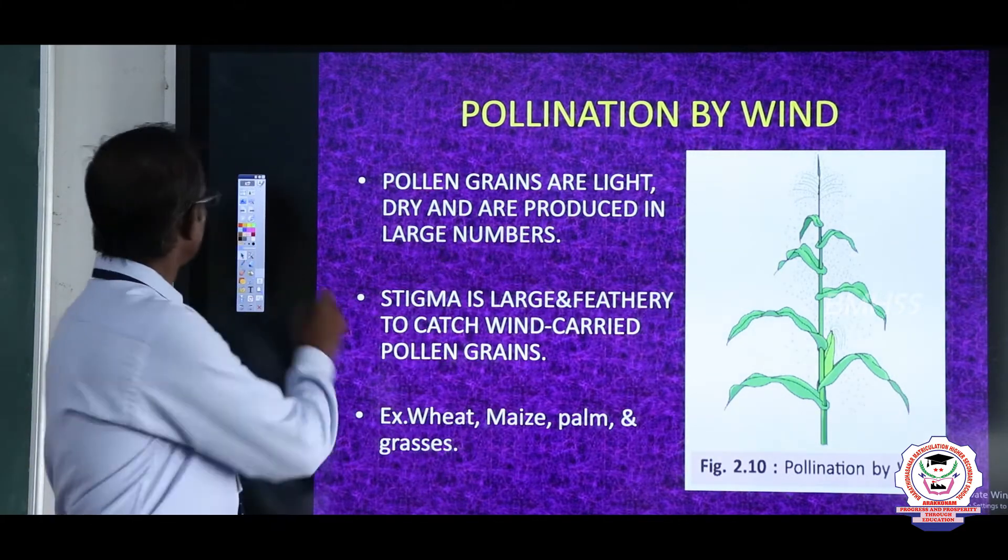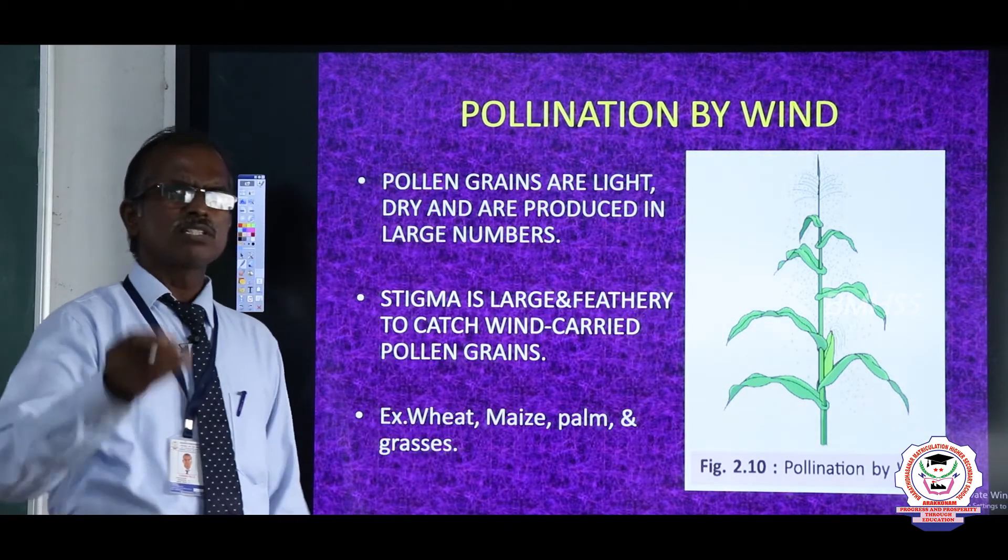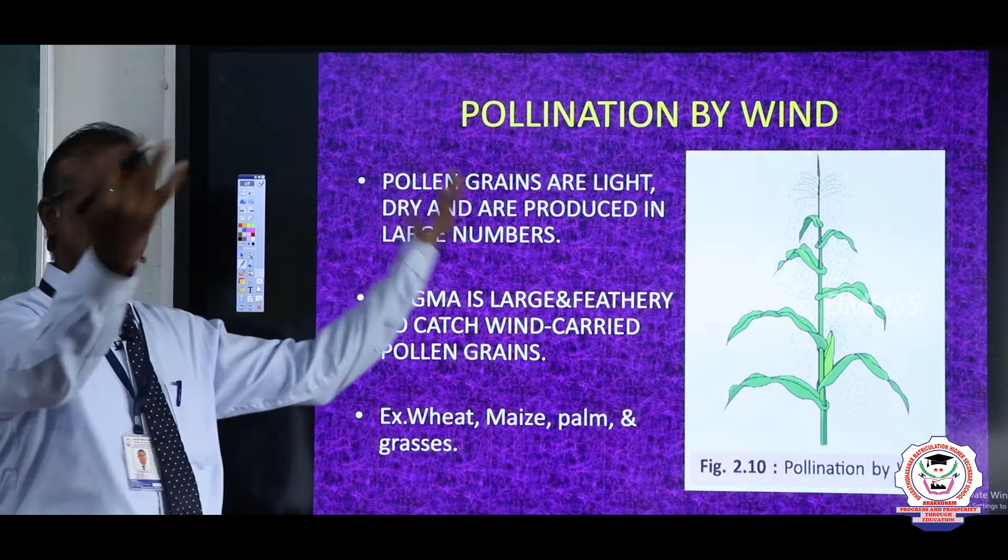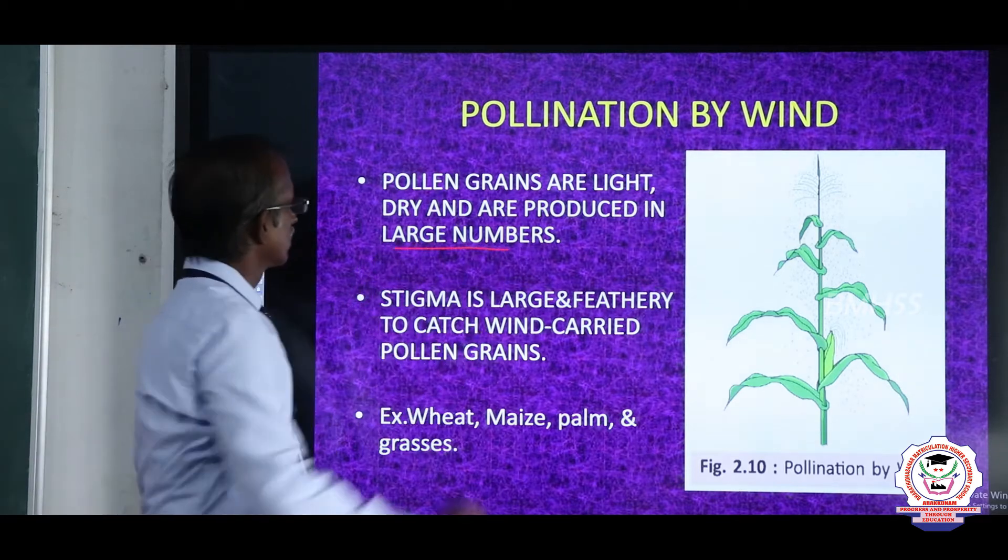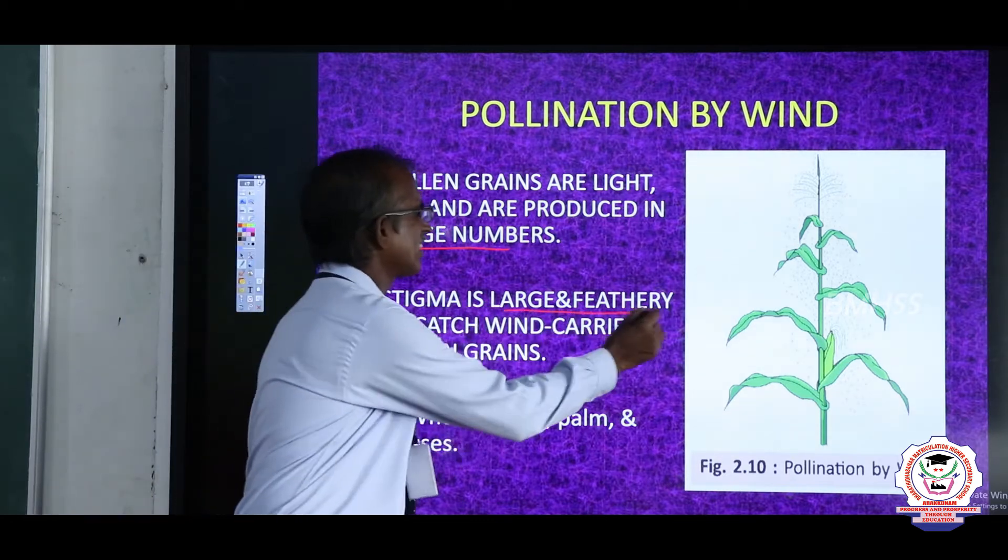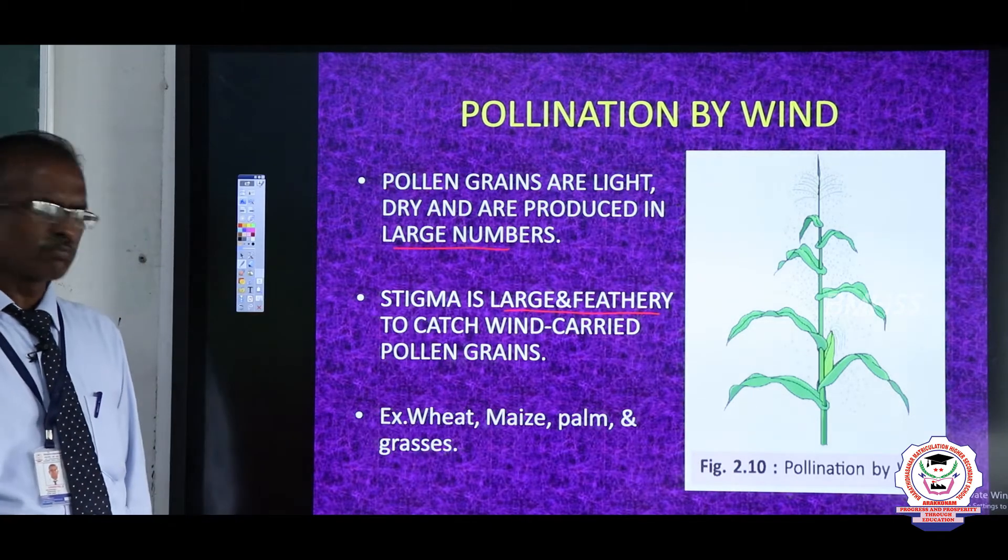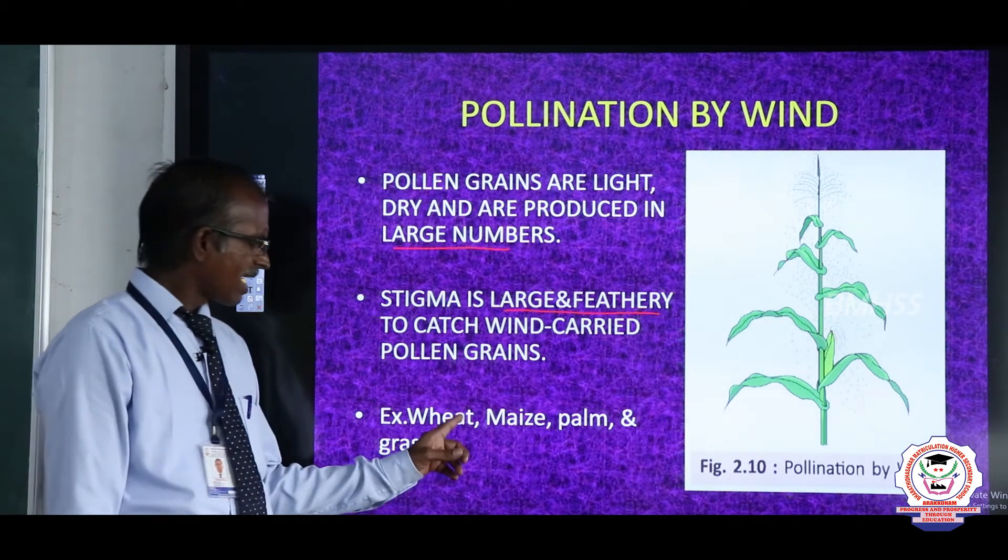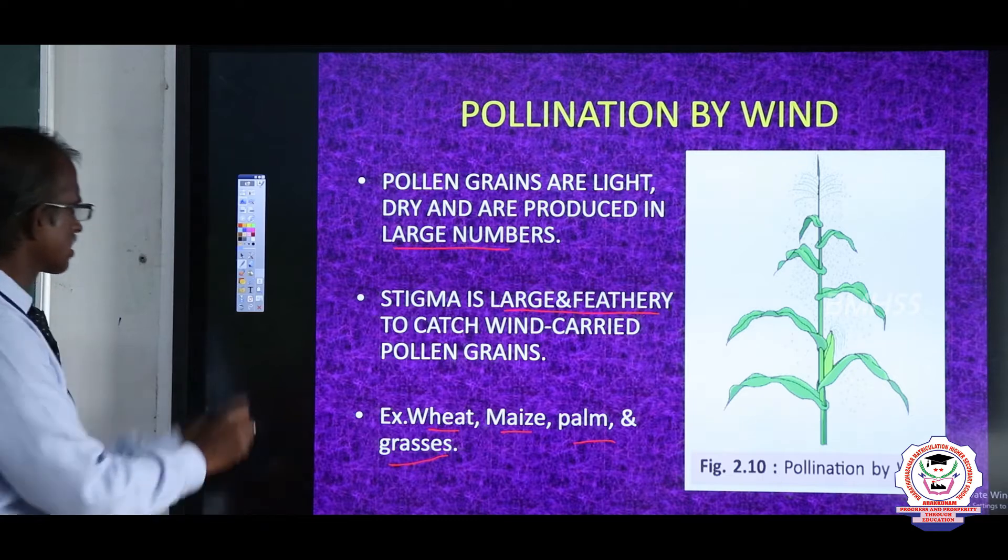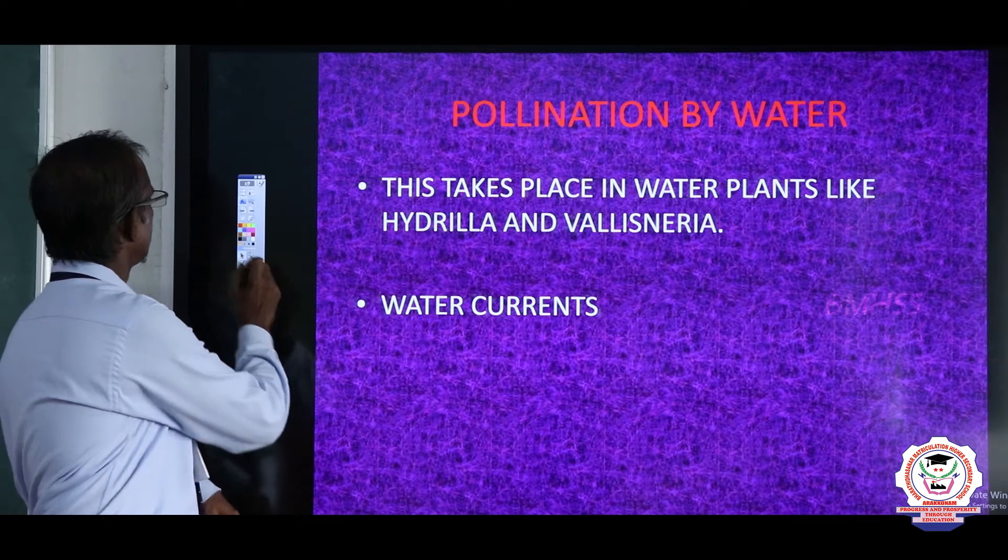Pollination by wind: In this case, the pollen grains are always very light and dry and produced in large numbers. The stigma is always large and feathery in nature to catch the wind-pollinated pollen grains. This occurs in wheat, maize, fern, and grasses.